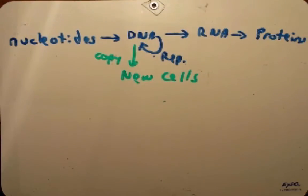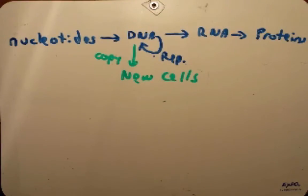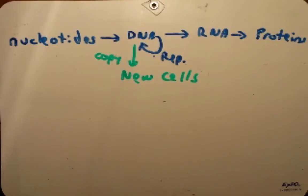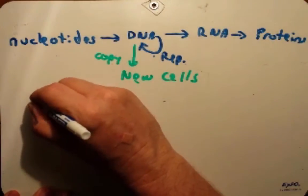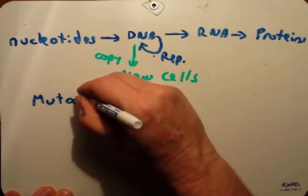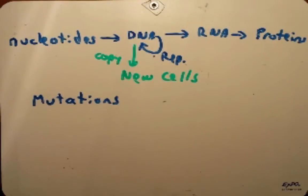We've talked in general terms about these different pathways and what would happen if you mutated certain things or certain genes that encoded certain enzymes, but we really haven't talked about mutations yet — what they are and how they're caused. For the most part we've been focusing on what is supposed to happen and how it's supposed to work. Now I'd like to focus, for the next several podcasts and certainly before our next exam, on mutations and how mutations affect this whole process.